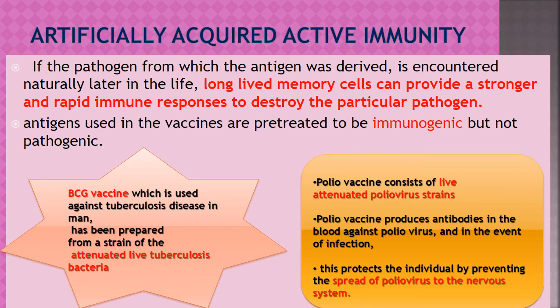The polio vaccine consists of live attenuated polio virus strain. Poliomyelitis — commonly called polio — is caused by this virus. The polio vaccine produces antibodies in the blood against the polio virus and protects the individual by preventing the spread of the polio virus to the nervous system. In polio, the nervous system is affected and the person loses capacity of movement.